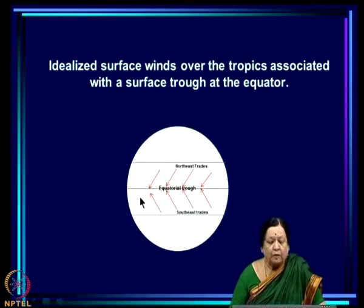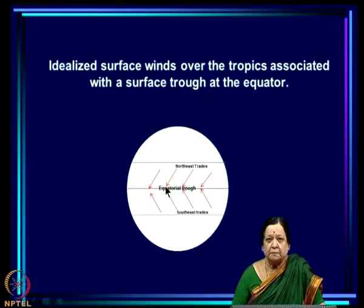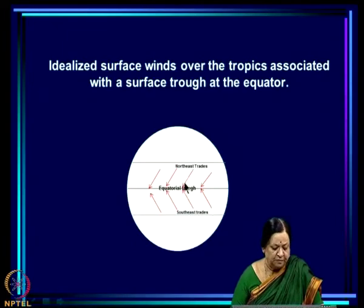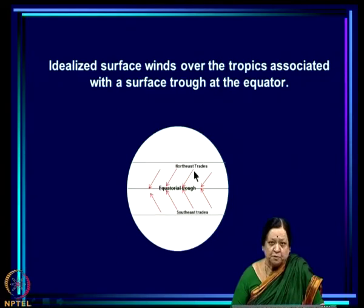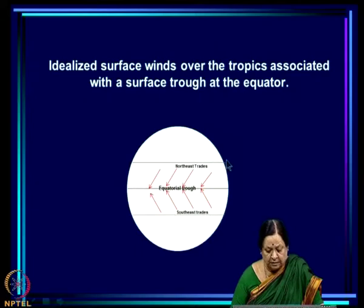An idealized picture of annual average circulation in the tropics: there is an equatorial trough — the region of low pressure around the equator where heating and temperature are maximum — and into this low pressure region winds converge at the surface. Because of the Coriolis force, they get an easterly component. The net result is surface winds toward the equatorial trough from the northeast in the northern hemisphere and from the southeast in the southern hemisphere — these are the northeast and southeast trades, emanating from the subtropical high pressure regions.